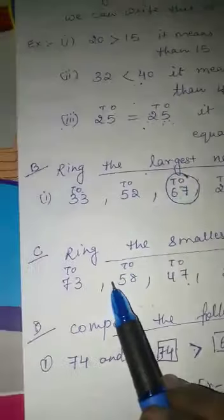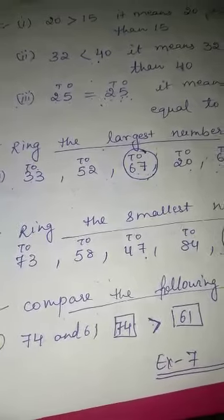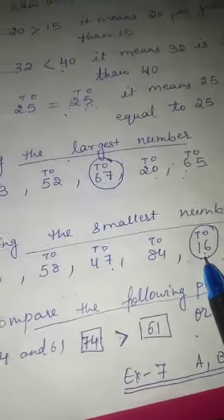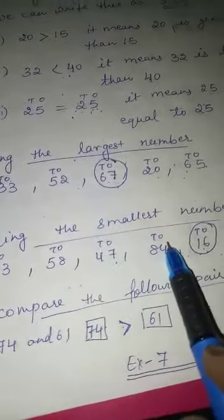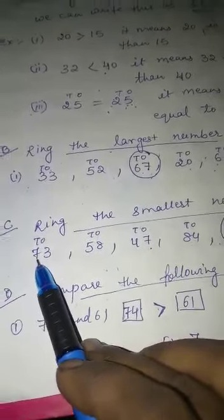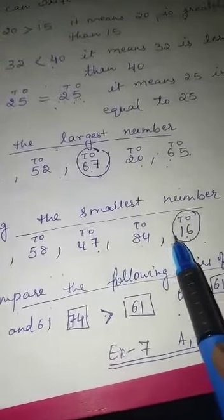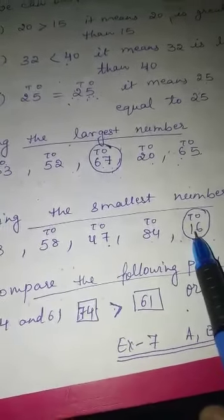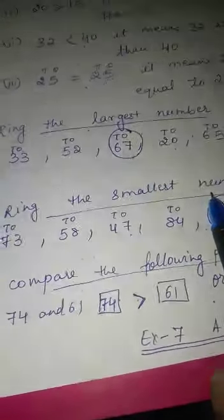Next, ring the smallest number. The numbers given are 73, 58, 47, 84, 16. I have written tens and ones above. You will look at the tens place: 7, 5, 4, 8, 1. Which one is small? 1 is the smallest. That means 16 is the smallest number.